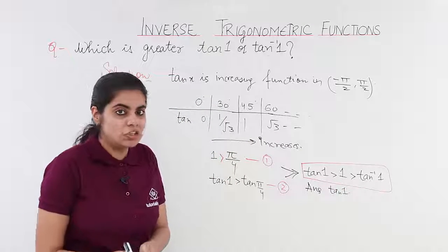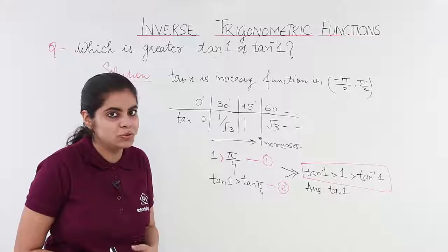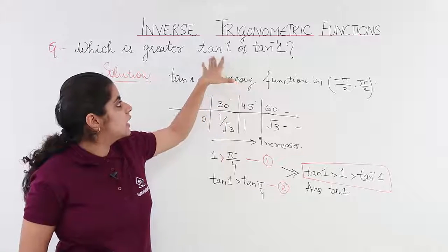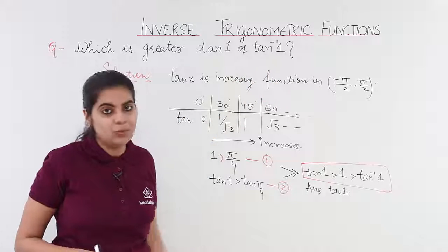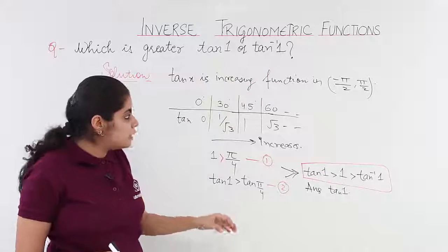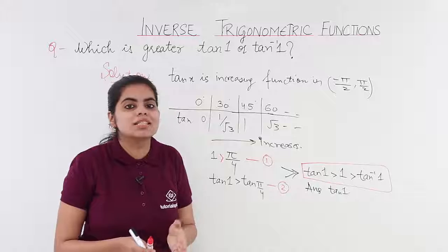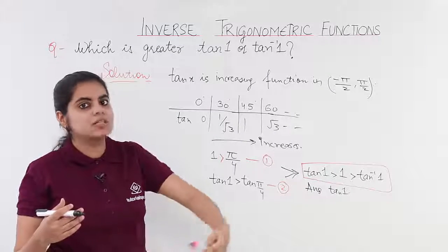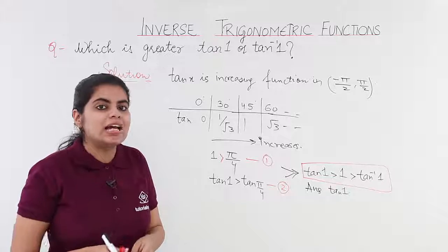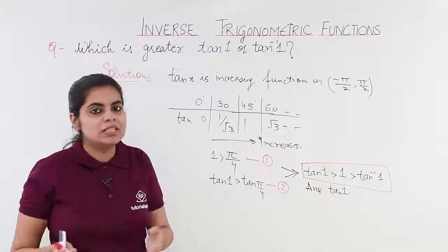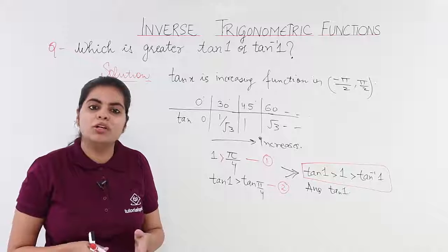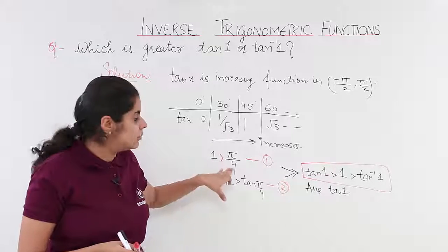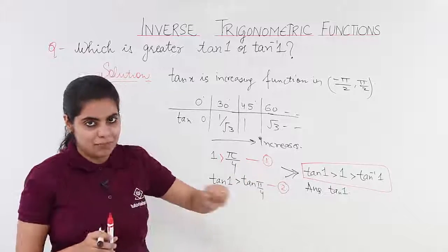For those who have still not understood, let me repeat the solution once again. The question was to find which is greater amongst tan 1 and tan inverse 1. Right? We saw that the graph is such that in minus pi by 2 to pi by 2 the values increase. So, if this happens and I know the value of pi is approximately 3.142 or 22 upon 7. So, these values comparison 1 is greater than pi by 4. The first equation kept aside.